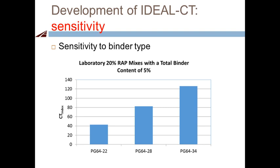The test is also sensitive to binder type. Looking at three mixes all with 20% RAP and 5% total asphalt content, the only difference is the virgin binder. All have the same high-temperature PG grade of 64; only the low-temperature PG end changes — minus 22, minus 28, and minus 34. As expected, using softer polymer-modified binders increases cracking resistance significantly. Switching to PG 64-34 increases the CT Index to around 125.